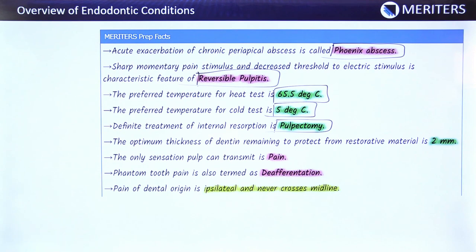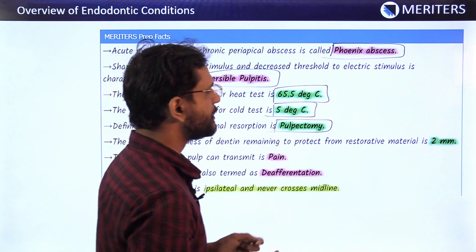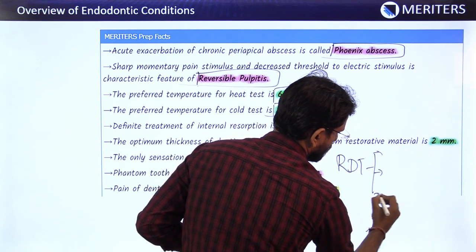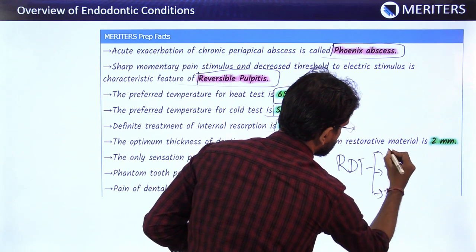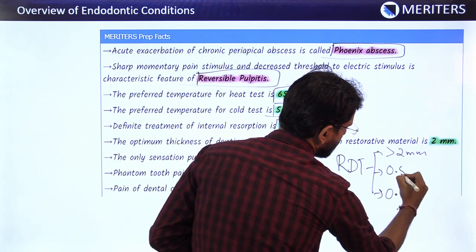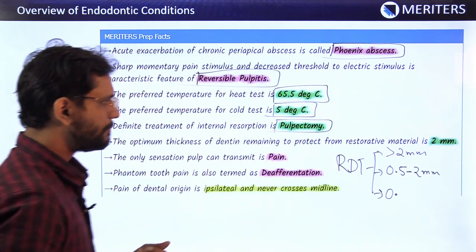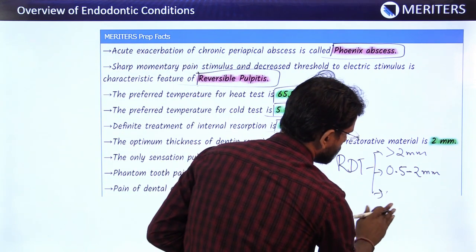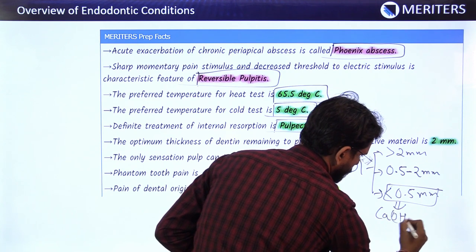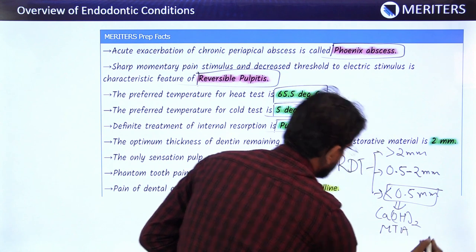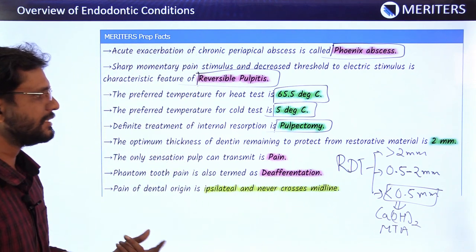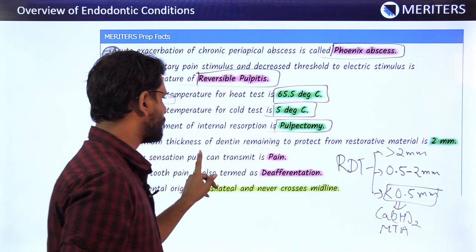The optimum thickness of dentine remaining to protect from restorative materials is 2 mm. There are three categories for remaining dentine thickness (RDT): more than 2 mm requires no protection; 0.5 to 2 mm requires bandaging of dentinal tubules; less than 0.5 mm requires medicaments or pulp protectors like calcium hydroxide and MTA. The only sensation which a pulp can transmit is pain.